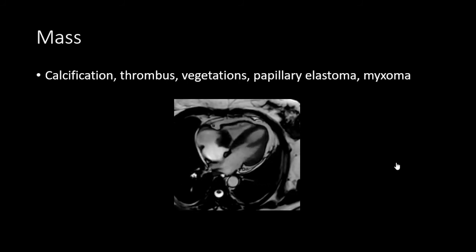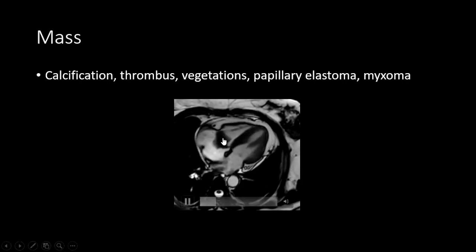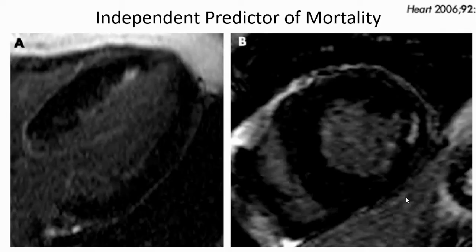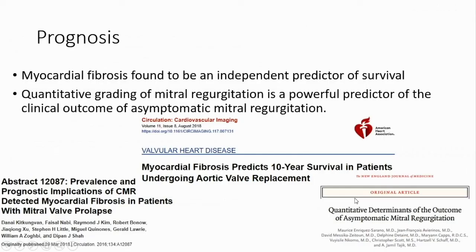Another indication for cardiac MRI is the presence of masses on valves, with common causes including calcification, thrombus, vegetation, papillary fibroelastoma, or myxoma. Multiple studies have shown that myocardial fibrosis is an independent indicator of mortality and affects prognosis in patients with valvular heart disease.